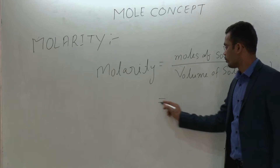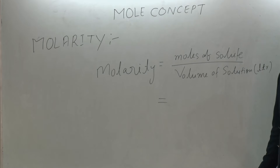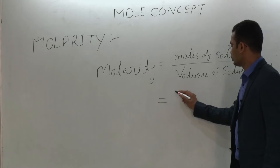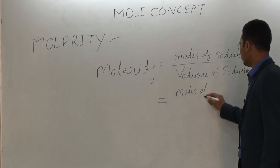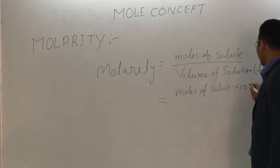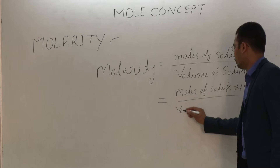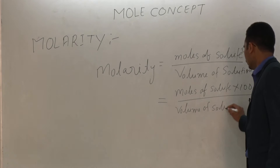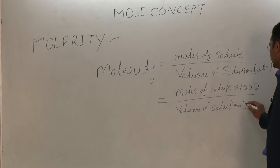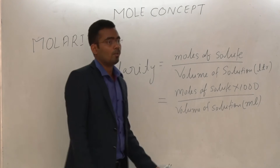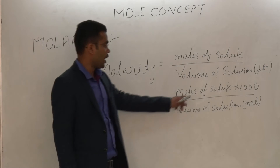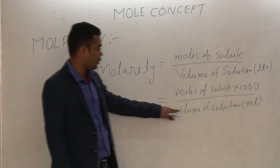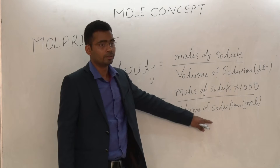So now, if volume is given in mL (that is millilitres), you have to convert it to litres. This means molarity equals moles of solute multiplied by 1000, divided by volume of solution in mL. Because when you convert mL to litres you divide by 1000, so therefore you multiply by 1000.